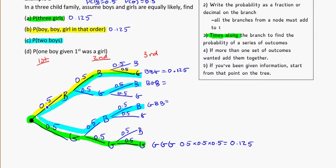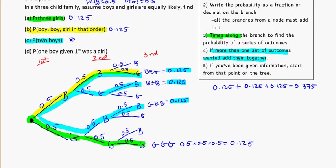I need to find the probability for each of these individual outcomes. Same thing for all of them - I'll times along. So that's 0.5 times 0.5 times 0.5, which is 0.125 for each. The catch here is that I've got three different situations that I want. If more than one set of outcomes is wanted, we need to add them together. So to get two boys, my ways that can happen are three ways here, so I'm going to add all three of those together: 0.375. So I have a 0.375 chance of having two boys in any order.